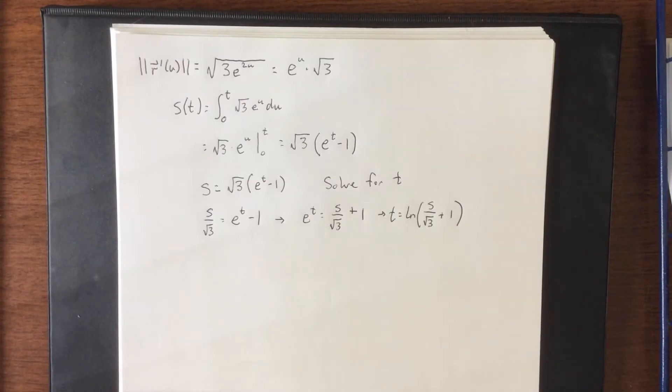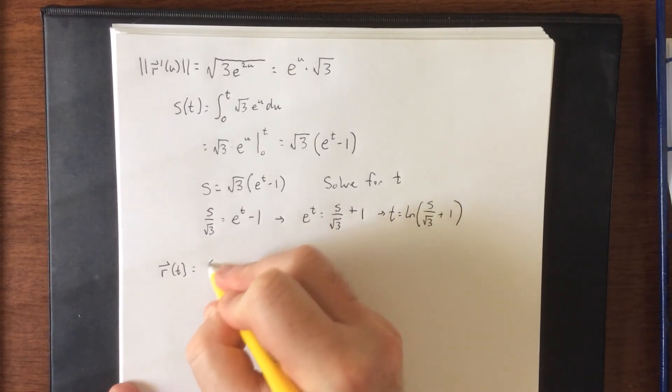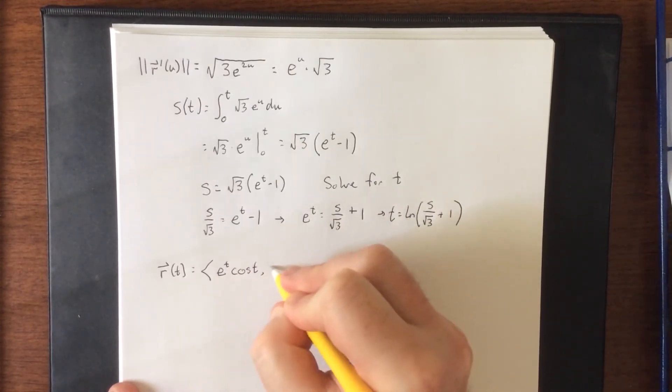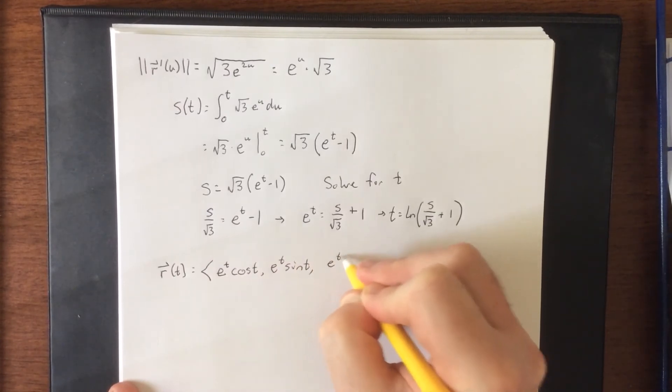What I'm going to do is take this and plug this back into the original vector function r of t. So r of t, if you'll recall from the previous page, was e to the t cosine of t, e to the t sine of t, and e to the t.